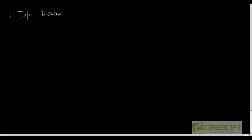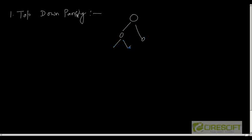Today we will look at how we can create a syntax tree using a technique called top-down parsing. This technique is called top-down parsing because we create the syntax tree in a top-down fashion — the root node is created first, followed by the leaf nodes.